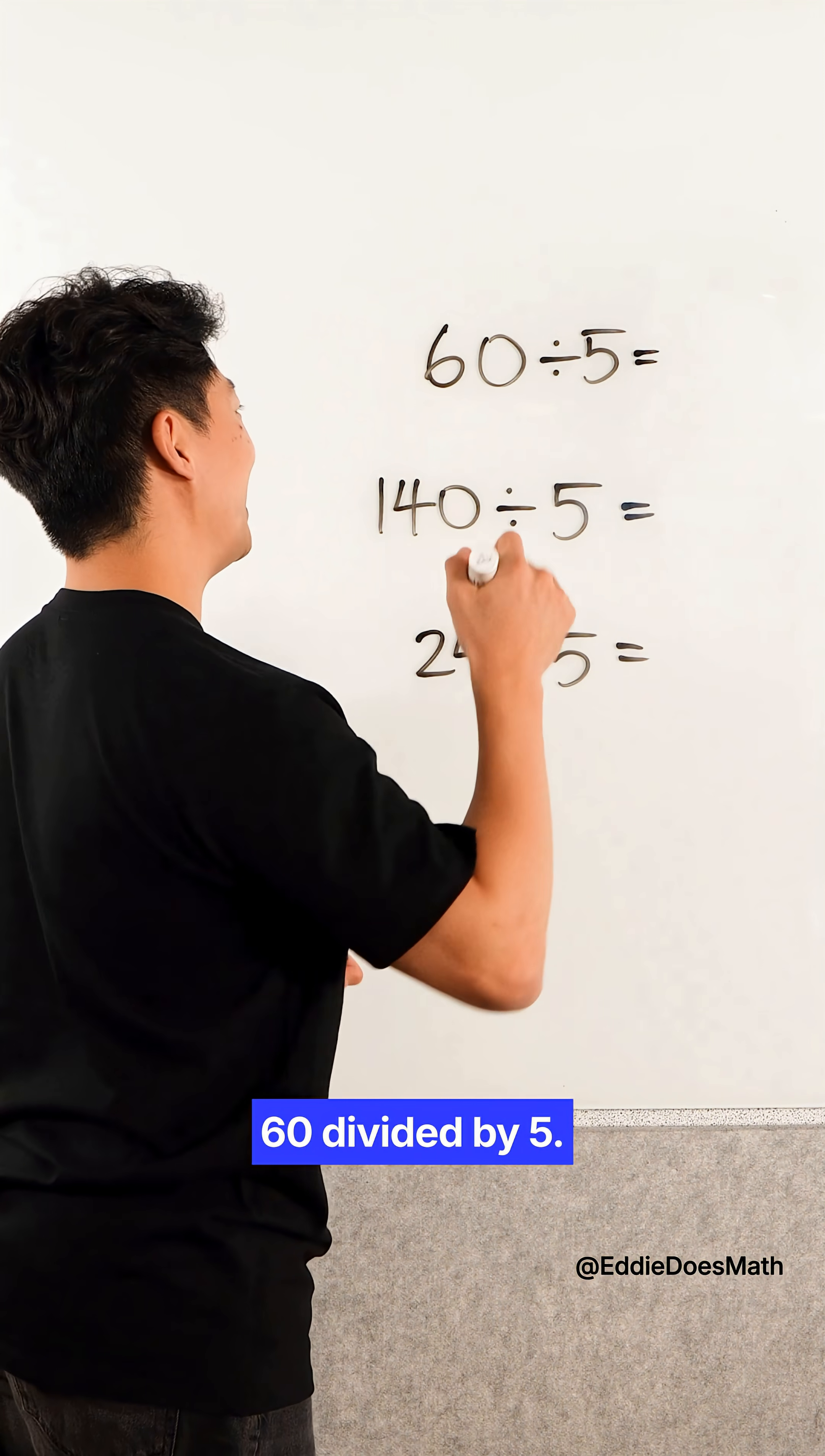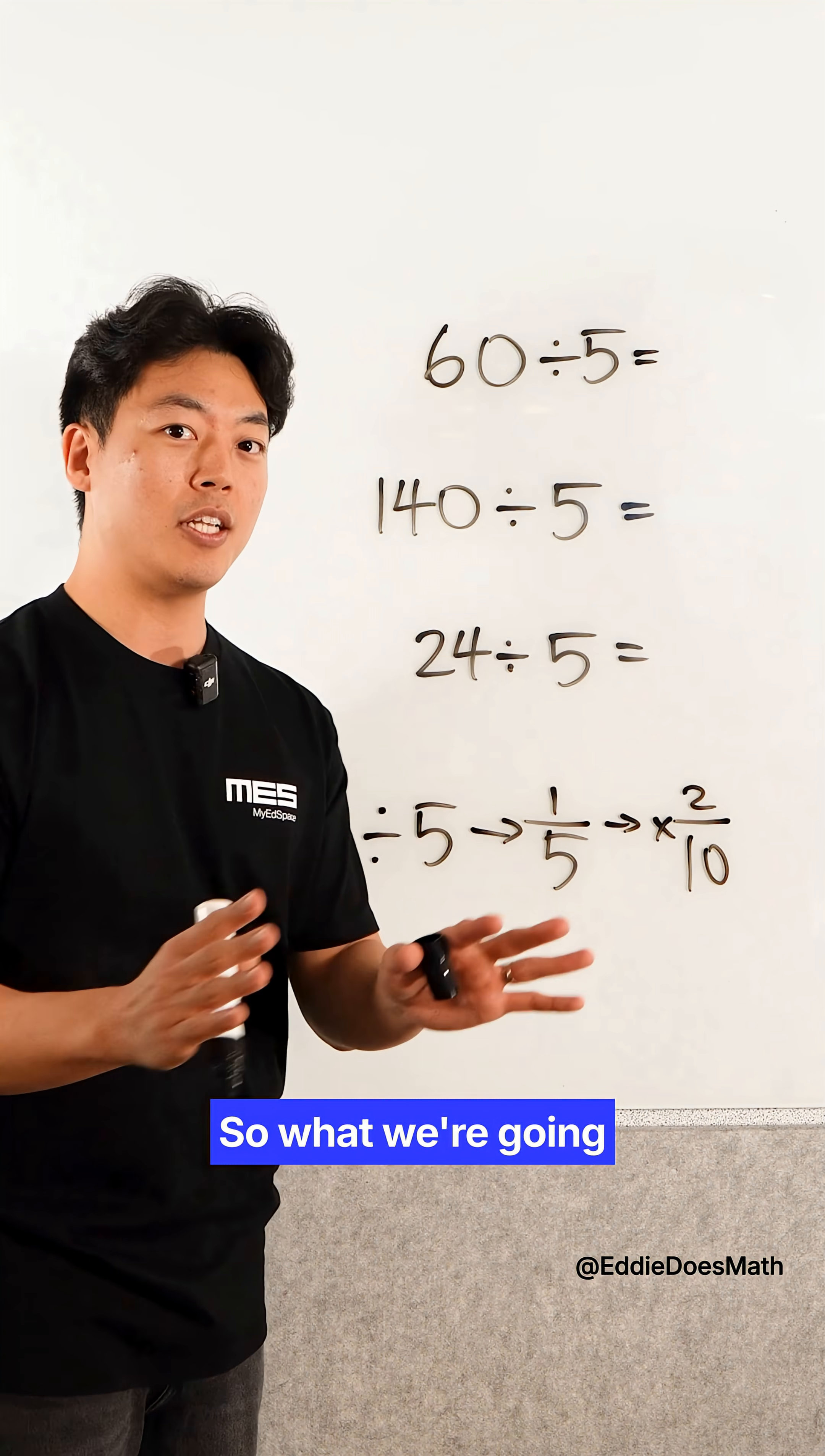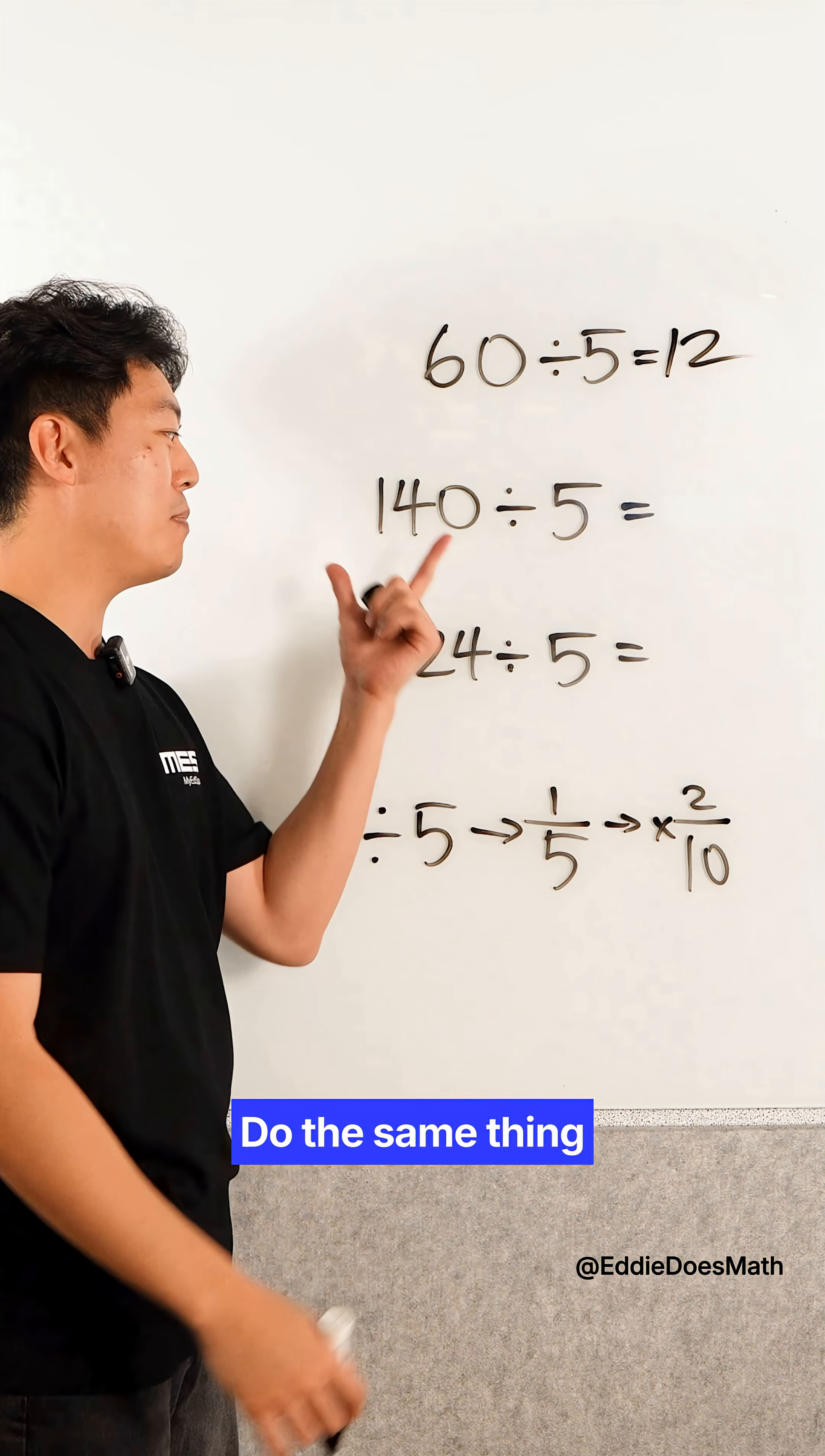60 divided by 5. When we divide by 5, we're actually multiplying by 1/5, but what's easier than multiplying by 1/5 is multiplying by 2 over 10. So what we're going to do here is multiply this number by 2 and then divide by 10.